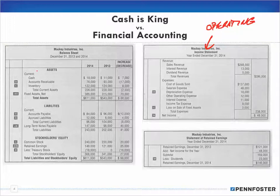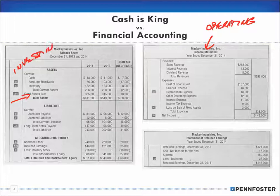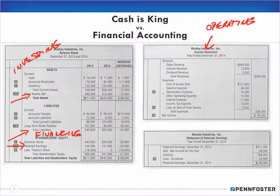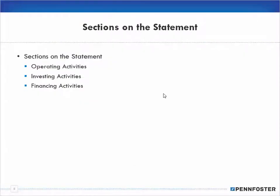On the balance sheet, the asset section generally relates to investing activities. In our long-term liabilities and stockholders' equity, we're talking more along the lines of financing activities. We're going to look at those accounts and see what changes we had, and take those into consideration in order to arrive at our cash position.